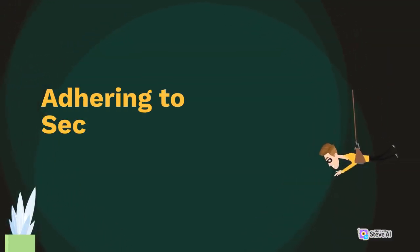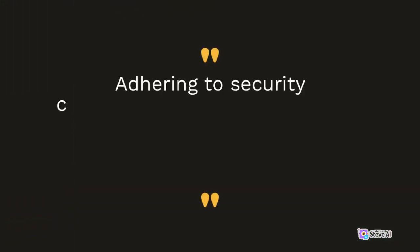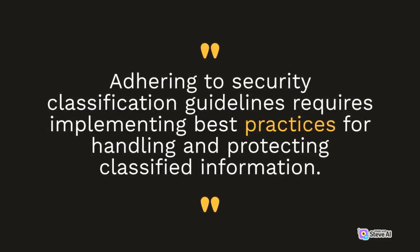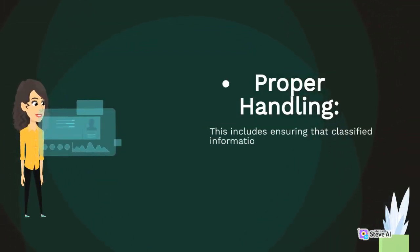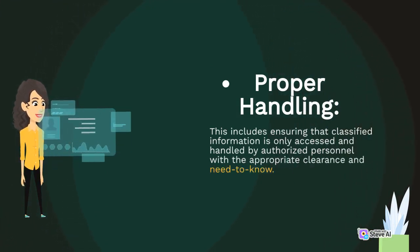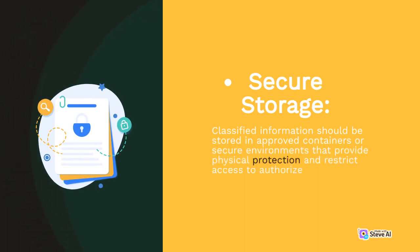Adhering to security classification guidelines requires implementing best practices for handling and protecting classified information. Proper Handling: This includes ensuring that classified information is only accessed and handled by authorized personnel with the appropriate clearance and need-to-know. Secure Storage: Classified information should be stored in approved containers or secure environments that provide physical protection and restrict access to authorized individuals.